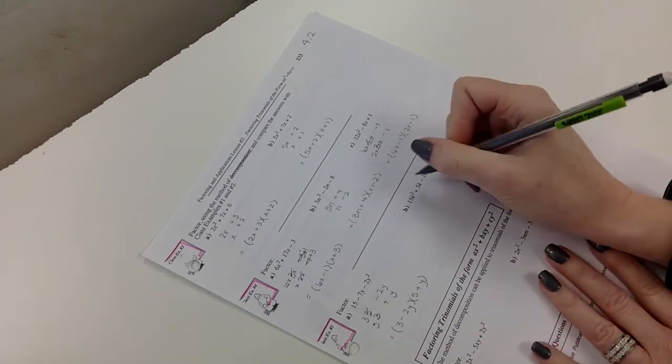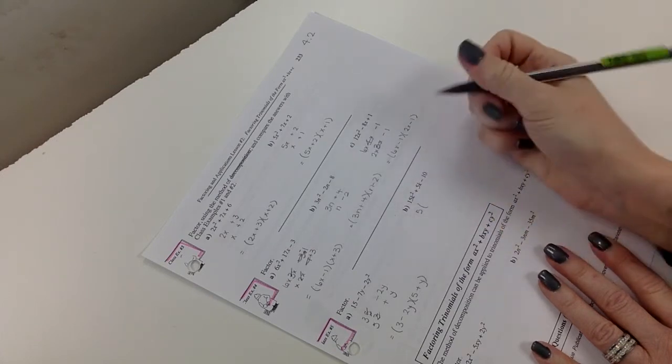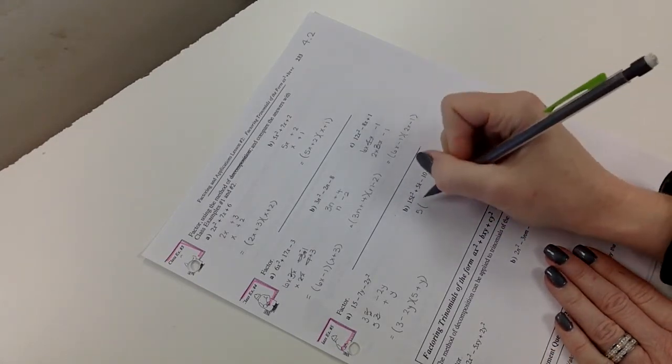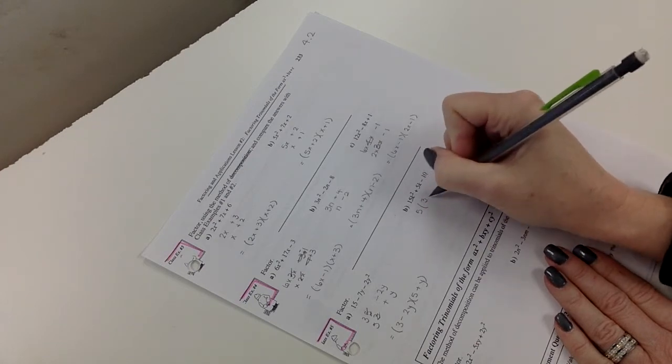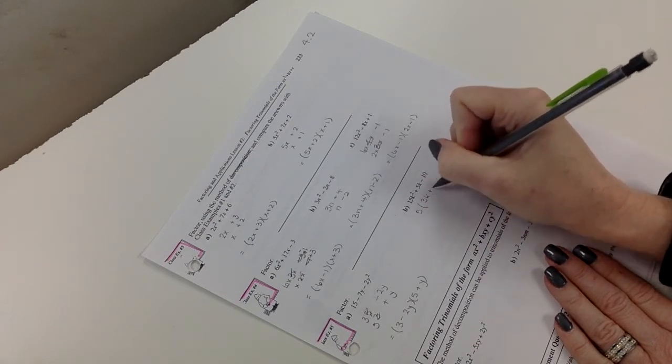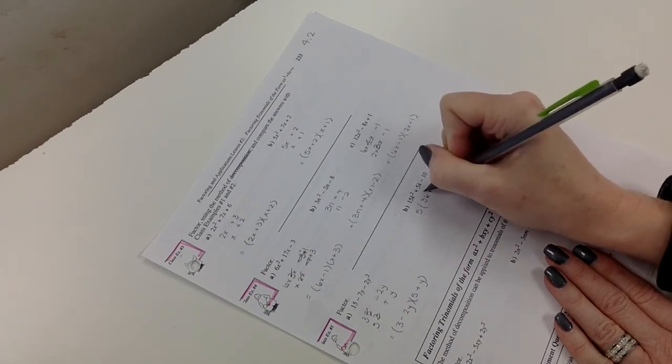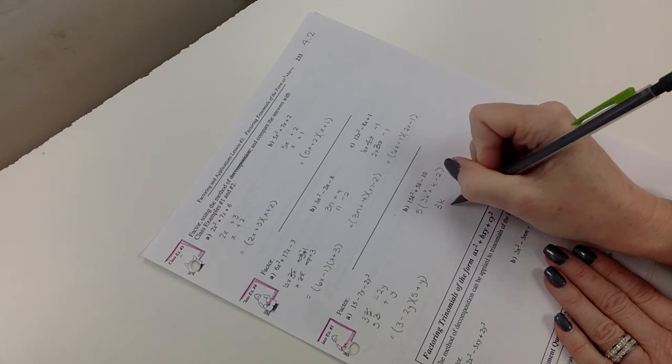Next one. Oh, I can take out a 5. That's gonna make my life easier. You can factor from here and take it out later. But it just makes it much nicer if you take it out to begin with. You have smaller numbers. So 3k plus k minus 2. And now, whoops, k squared.